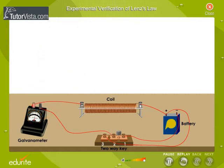Now remove the key from 1 and 2 and insert it between 2 and 3 so that no current flows through the circuit.